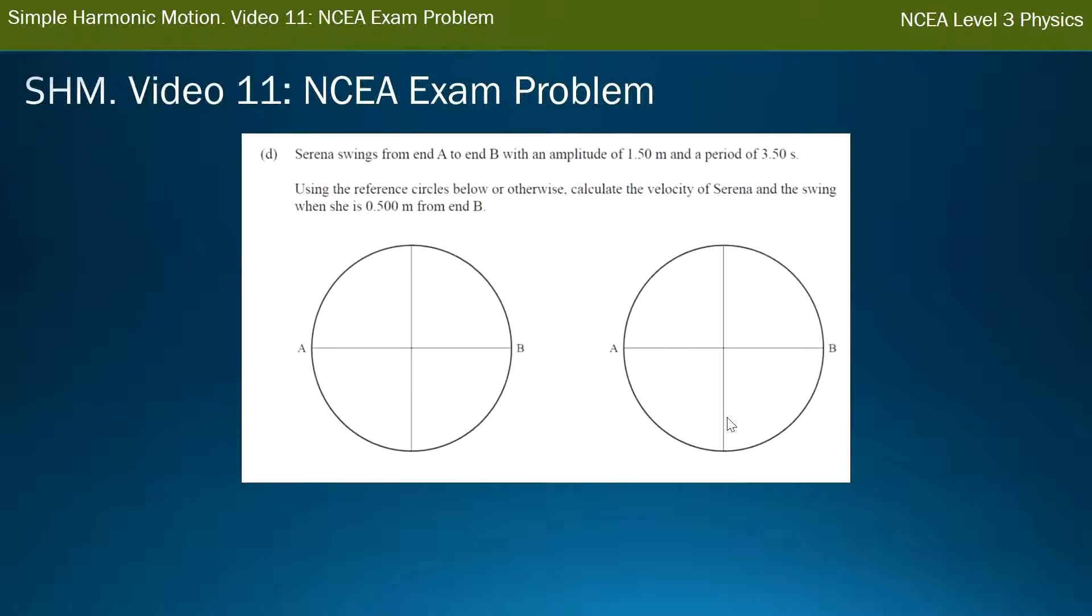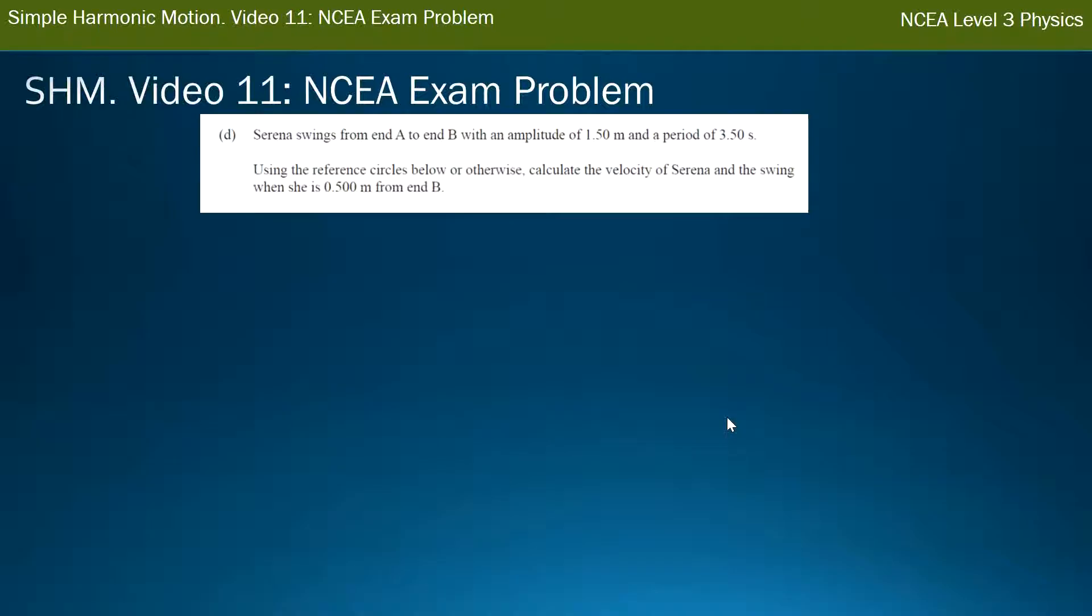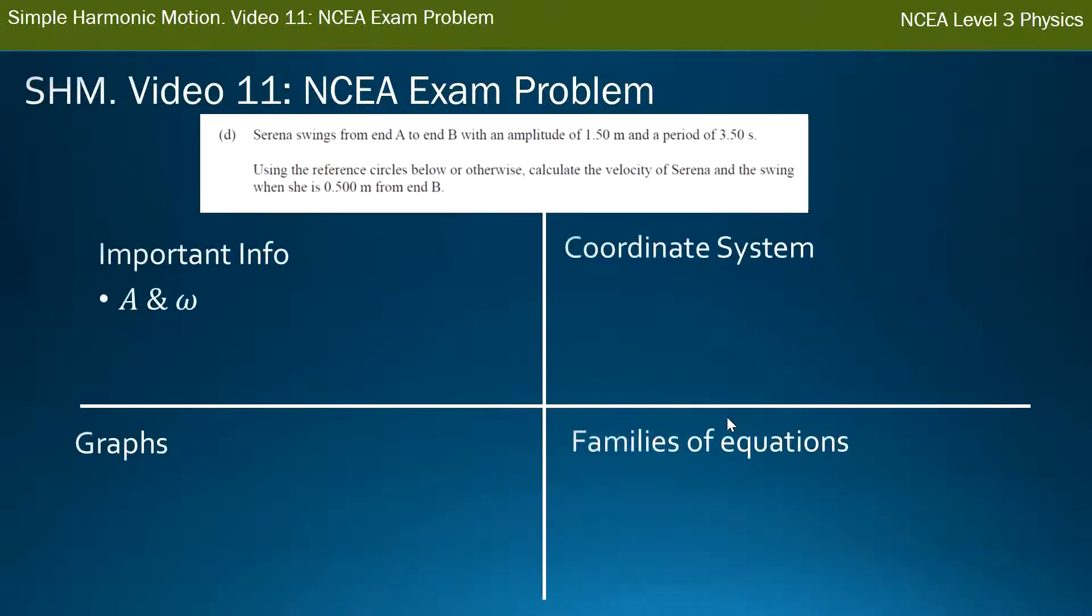So Serena swings from end A to end B with an amplitude of 1.5 and a period of 3.5. Use the reference circles below or otherwise calculate the velocity of Serena and the swing when she is 0.5 meters from the end of B. So as I've said before, reference circles are a way of solving simple harmonic motion, but so are the wave equations that I end up using. So instead of using the reference circles, we're going to ignore them, and we're going to do it the way that I've taught you in the videos. And that is, we first of all have to write down our four things. Our important information, which is amplitude and angular frequency, our coordinate system, our graphs, and then choose our families of equations. Let's do that one at a time.